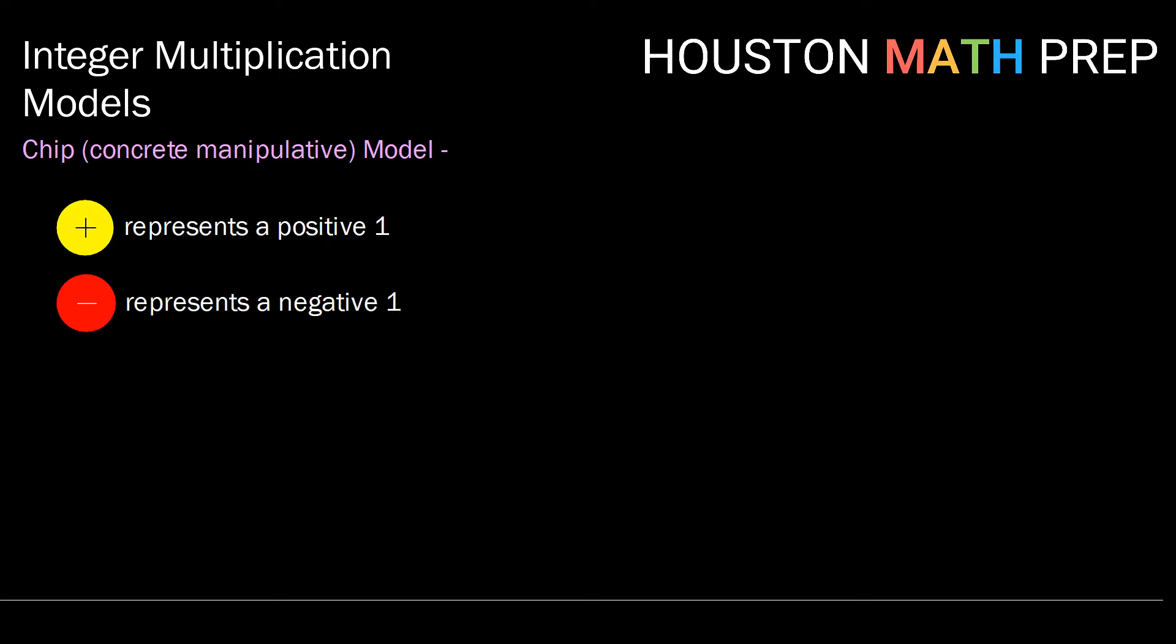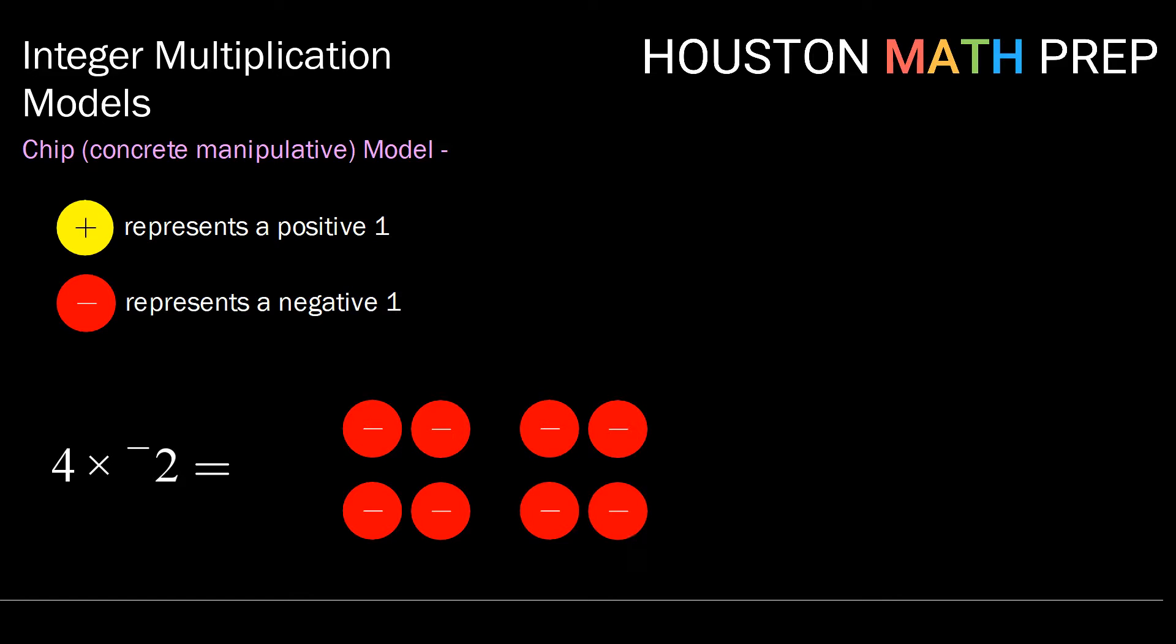Here's how we're going to model multiplication of integers. If we want 4 times negative 2, then we're going to take and put together 4 groups of 2 negative chips.